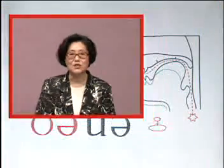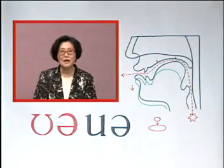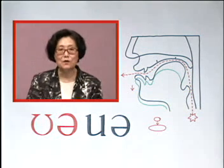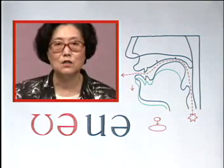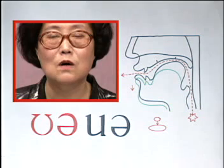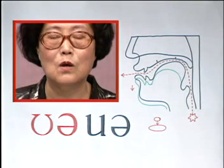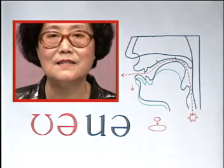最后一个双元音我们要学的是 /ʊə/（or）。我们在发音的时候呢有 O 很快地滑向 /ə/。注意不要将 O 发成 U。下面我们练习例词、短语和例句。